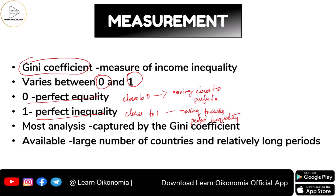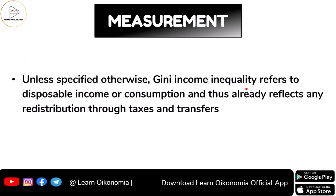Having perfect inequality or perfect equality is not possible in a real-life scenario because of many complications and imperfections. Most analysis of inequality gets captured by the Gini coefficient. It can be calculated for a large number of countries over relatively longer periods of time — this is considered an advantage. Unless specified otherwise, the Gini income inequality shows disposable income or consumption, and for this reason it already reflects any redistribution through taxes and transfers.